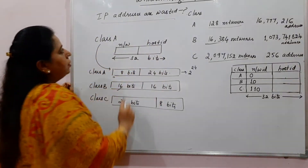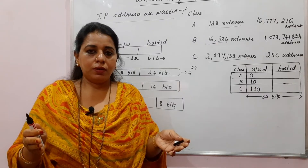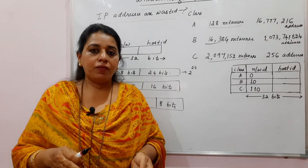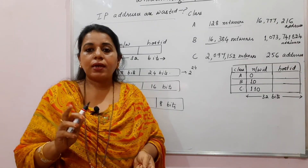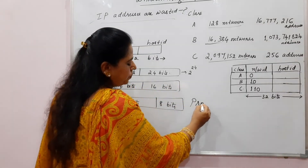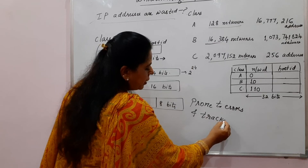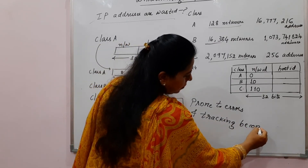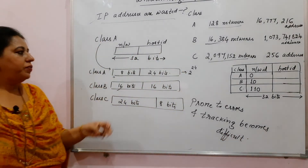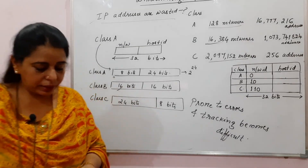This is one of the disadvantages. Additionally, maintaining a network with a very large number of hosts is difficult — if there is any fault, whether a software problem or hardware problem, it is very difficult to track. These kinds of large IPv4 blocks are prone to errors, and tracking those errors becomes very difficult. With this problem in mind, we shall now see the next type of addressing: classless addressing.